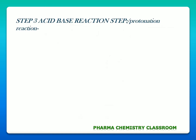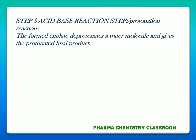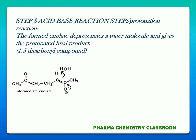Step 3 is an acid-base reaction step or a protonation reaction step. In this step the formed enolate deprotonates the water molecule and gives the protonated final product which is a 1,5-dicarbonyl compound. The negative charge on the oxygen shifts back and forms a carbon-oxygen double bond, which causes the carbon-carbon double bond to become more nucleophilic or more basic in nature, so it can abstract the proton from the water molecule and get protonated to give our final product.